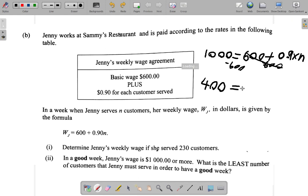So 400 equals 0.9n. Then you want n alone. You don't want 0.9n, so you need to get rid of 0.9. You divide by 0.9 and divide by 0.9 here. Do the same thing on both sides.